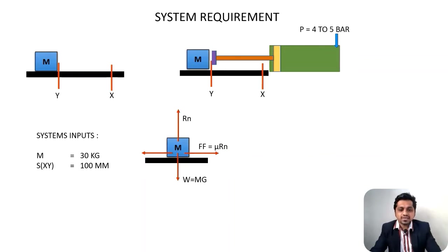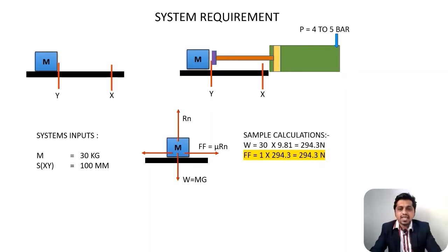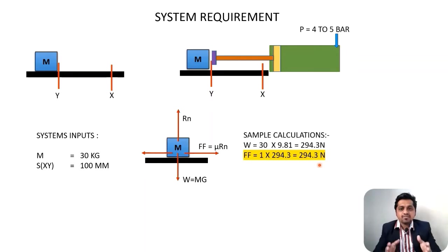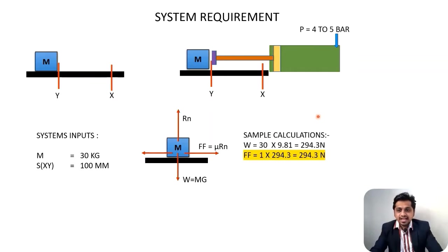Here are the calculations. The weight of the body is g × m = 294.3 N. The coefficient of friction (μ) depends on the materials of the block and surface. To be on the safe side, let's take μ = 1, so the frictional force is 294.3 N. This means a minimum force of 294.3 N must be generated by the pneumatic cylinder.